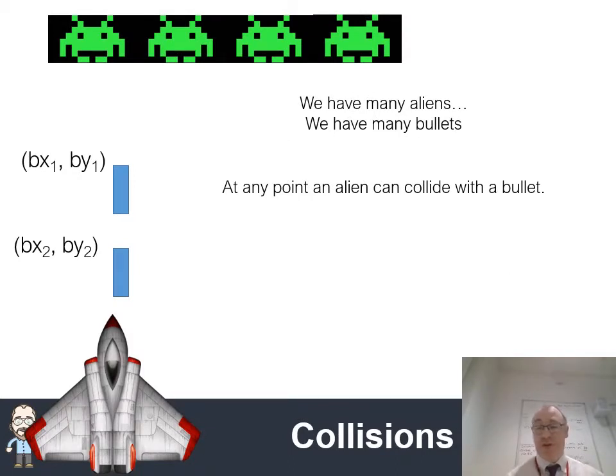The next thing to think about is how do we destroy aliens? We have lots of bullets and lots of aliens, so an alien can collide with any bullet. We can't just simply say the first bullet is going to check against the first alien, the second bullet against the second alien, because it doesn't work that way. The first bullet could hit the tenth alien, the second bullet might hit the first alien, depending on how the game's working.